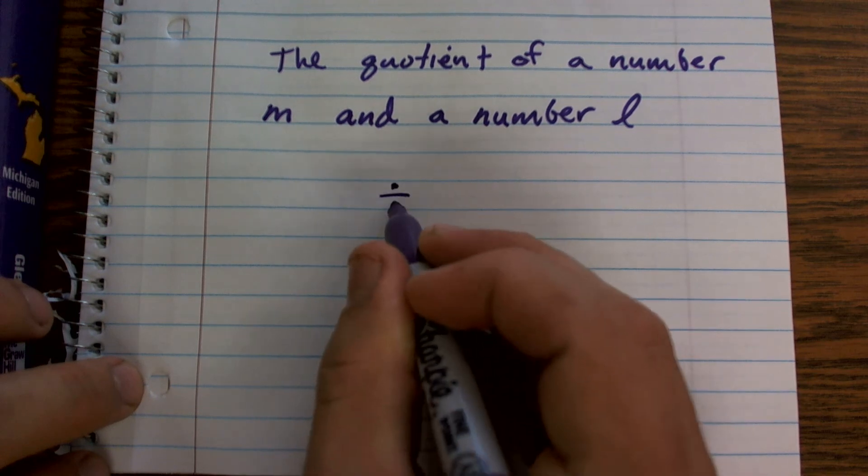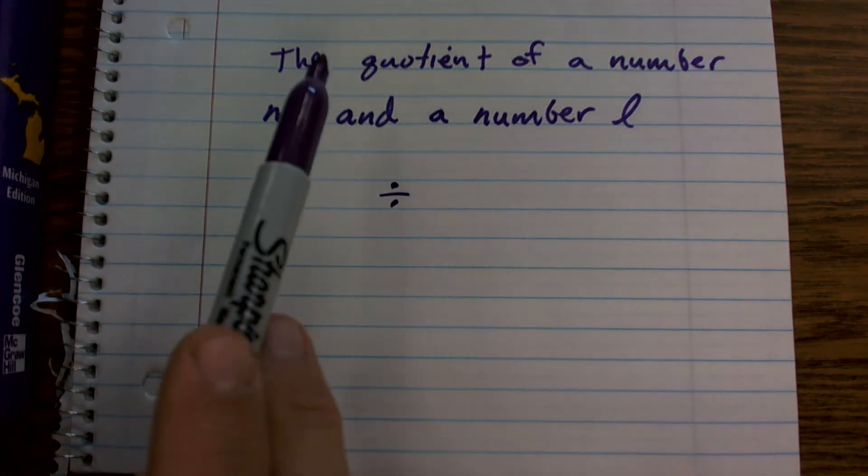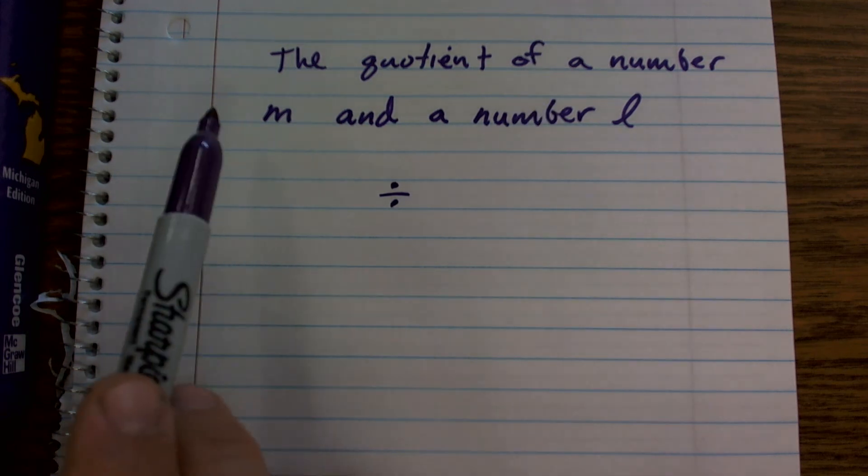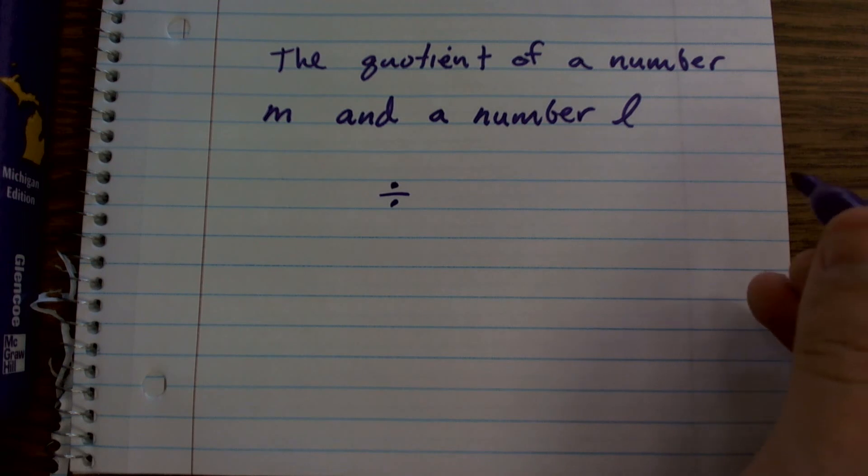So automatically, whenever I'm reading something, I hear quotient, I'm going to want to write the division symbol. So then it says I want to find the quotient of a number M and a number L. All right, now let's just say it was,